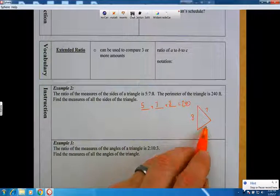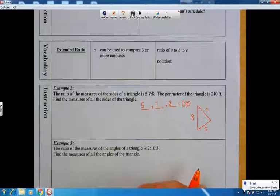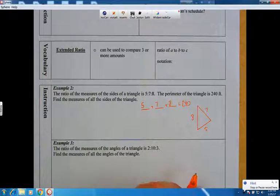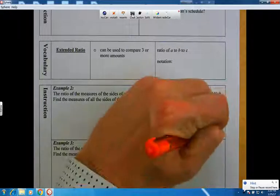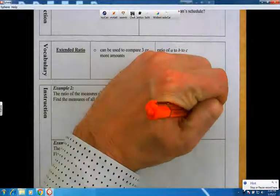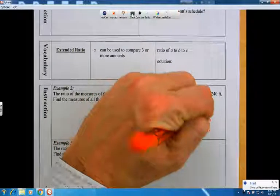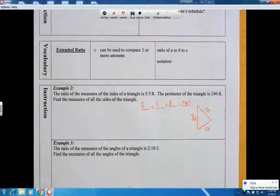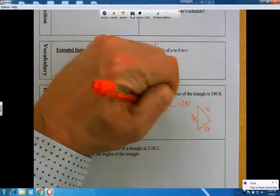And then we would know how long this is, and this is, and this is. So they go together in that ratio. And we don't know what that number is that we're supposed to times it by. When I don't know what a number is, I call it x. So I'm going to put that there, there, and there, and I'm going to do the same thing here.